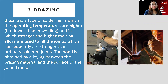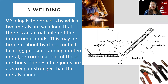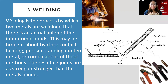Brazing is a type of soldering where operating temperatures are higher than regular soldering but lower than welding. The bond is obtained by alloying between the brazing material and the surface of the joint metals. Welding is the process by which two metals are joined with an actual union of inter-atomic bonds, resulting in joints as strong or stronger than the metals joined — the best choice for strong connections.